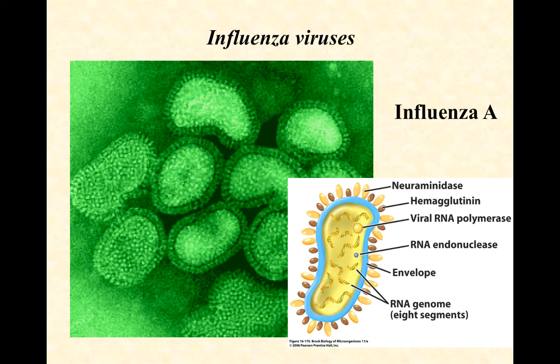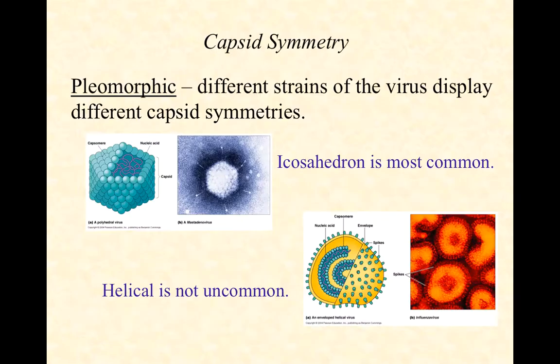Something big and important is missing from this sketch — I didn't notice it until I put it in here, but I thought I'd leave it in and let you do a little detective work. What key component of the influenza virion is missing from the cartoon drawing in the bottom right? We're going to talk about the envelope, neuraminidase, hemagglutinin, the viral RNA polymerase, and the eight-segmented RNA genome.